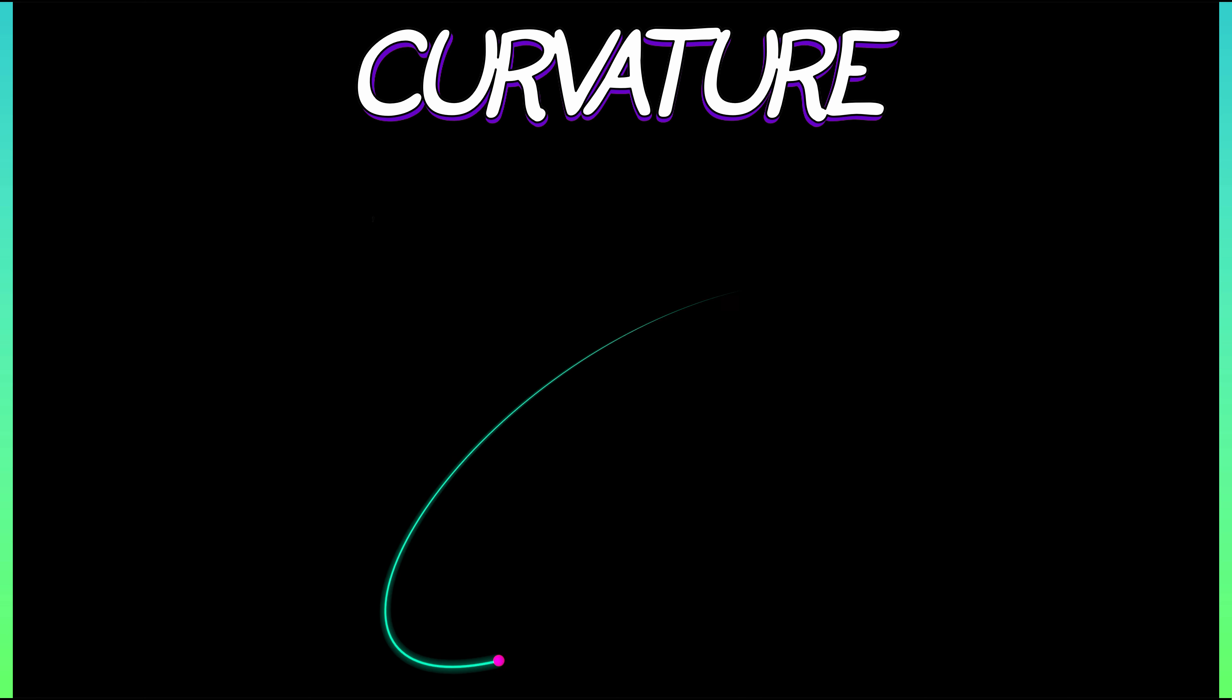Then, in this case, the curvature, kappa, is 1 over the radius, capital R, of that best-fit circle. Now, as you change the point on your curve, you can see how the circle changes its radius.